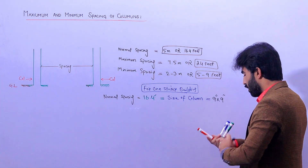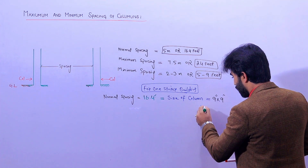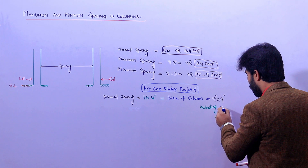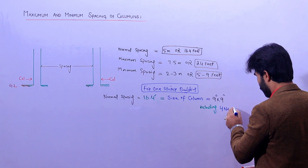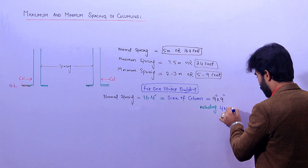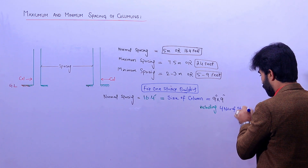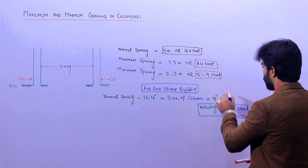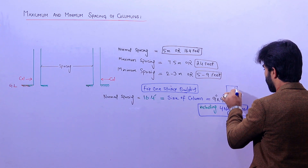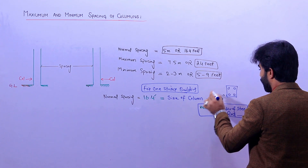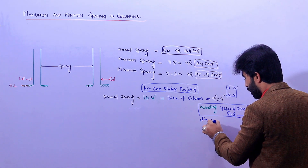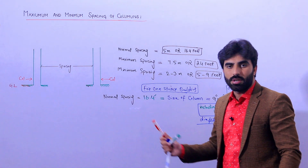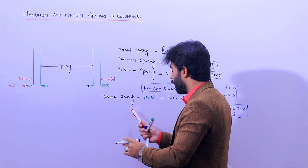This 9 by 9 inch column should include four numbers of steel rods. As you can see, inside the column we have four bars, and the diameter you can use is 12 millimeters for each bar. This is very important for the ground floor if you are going for normal spacing of about 16 feet.